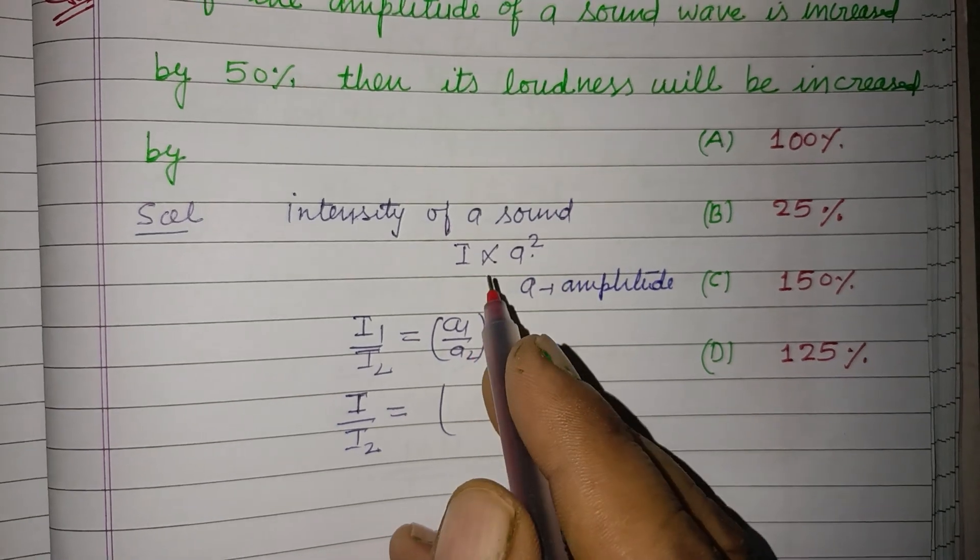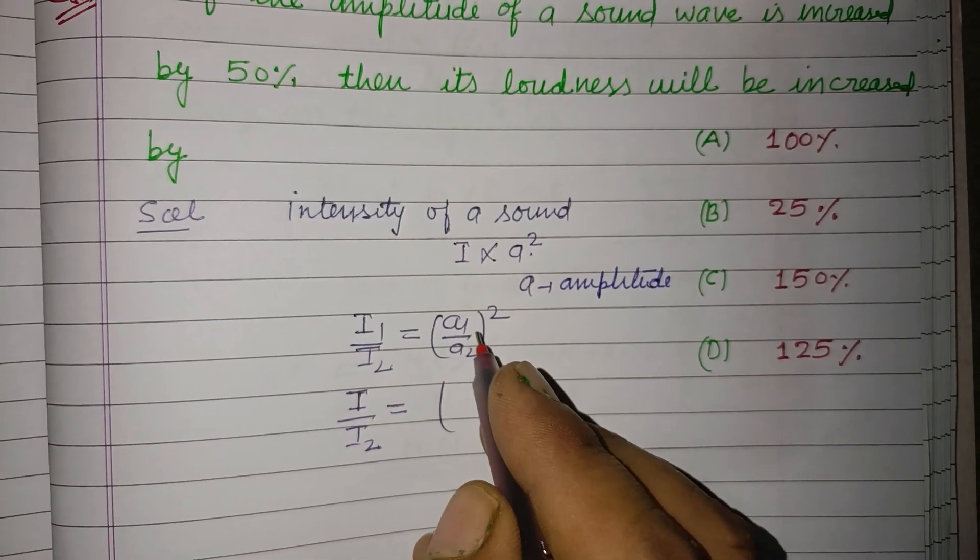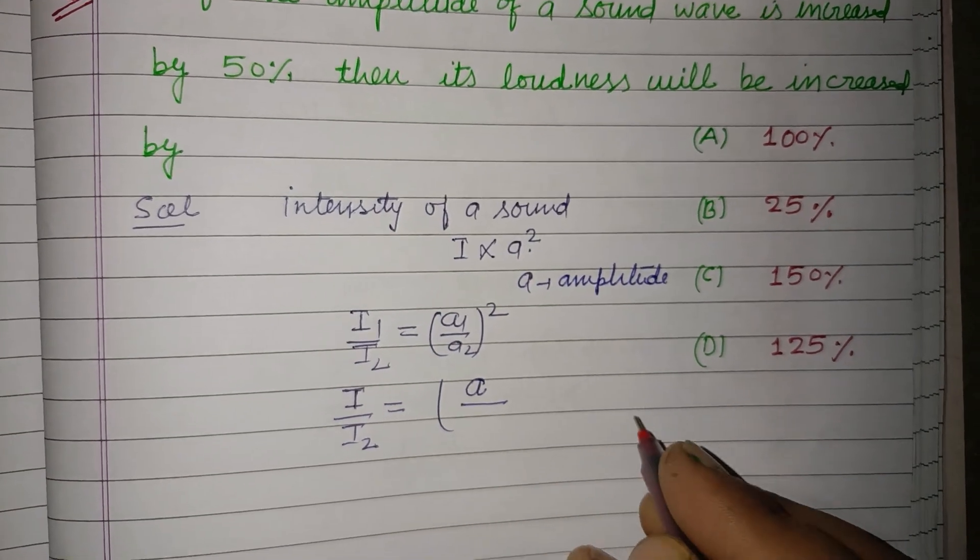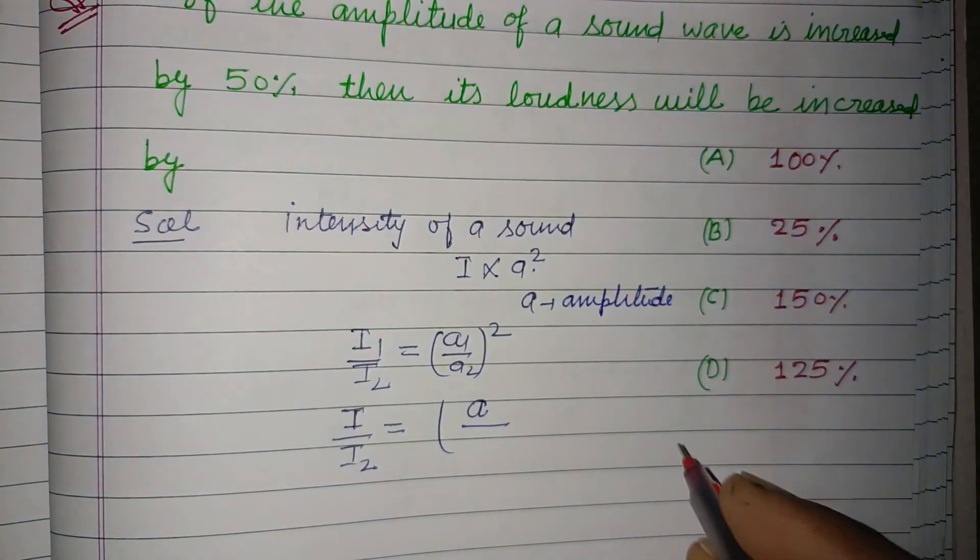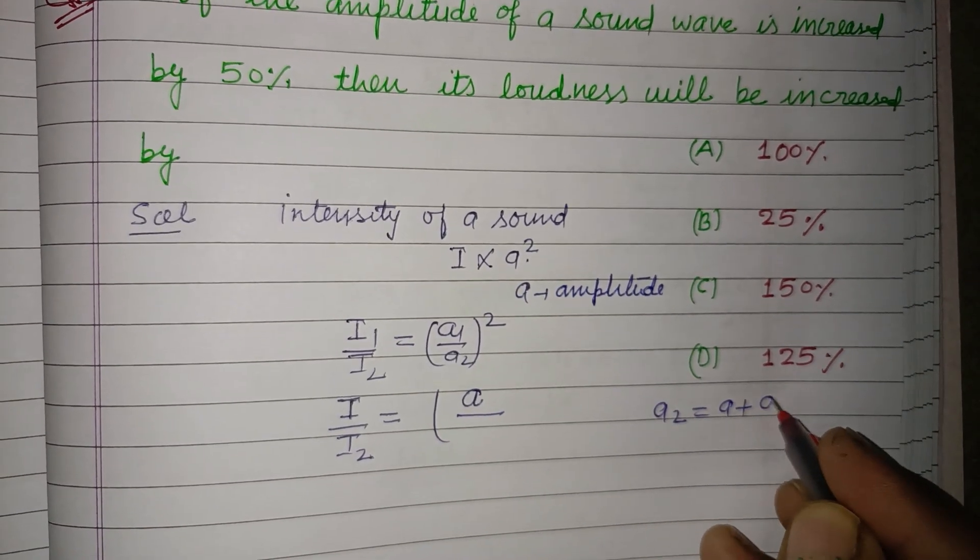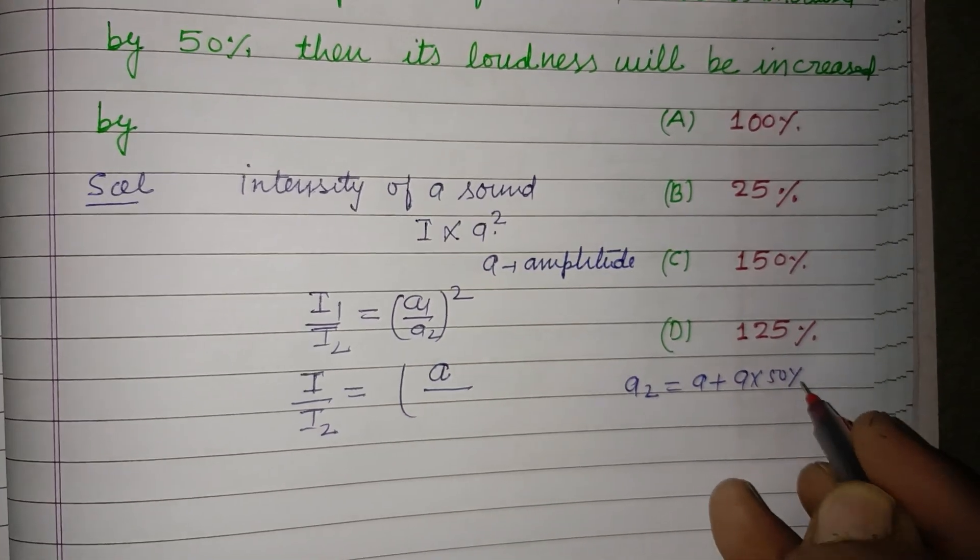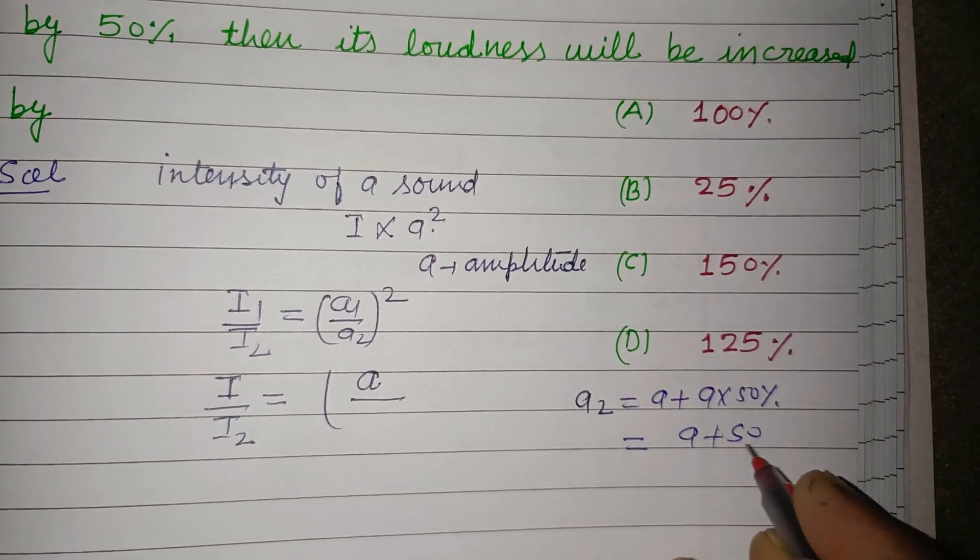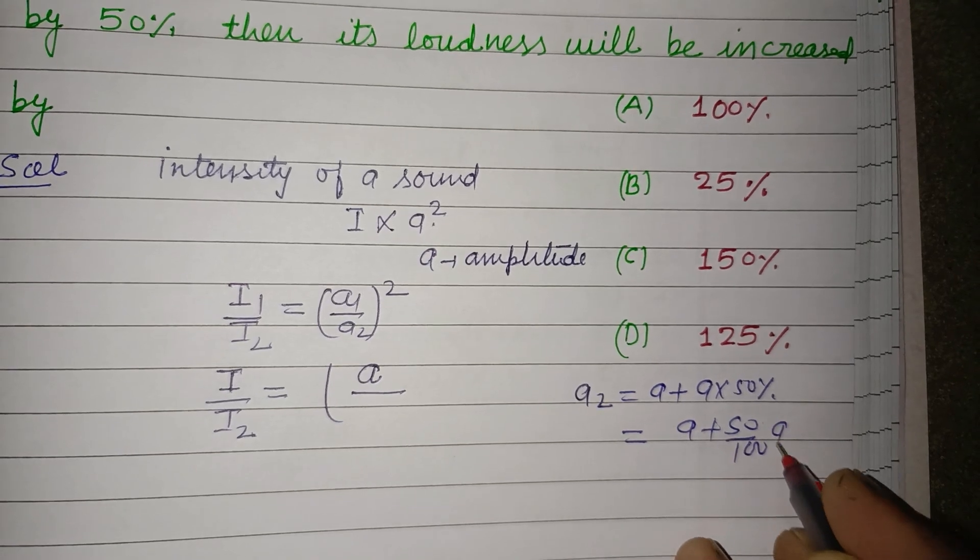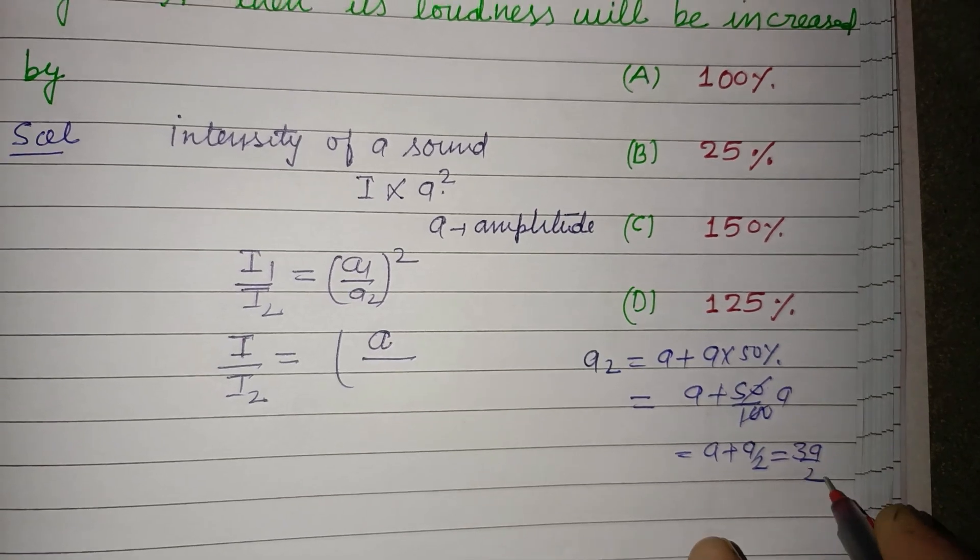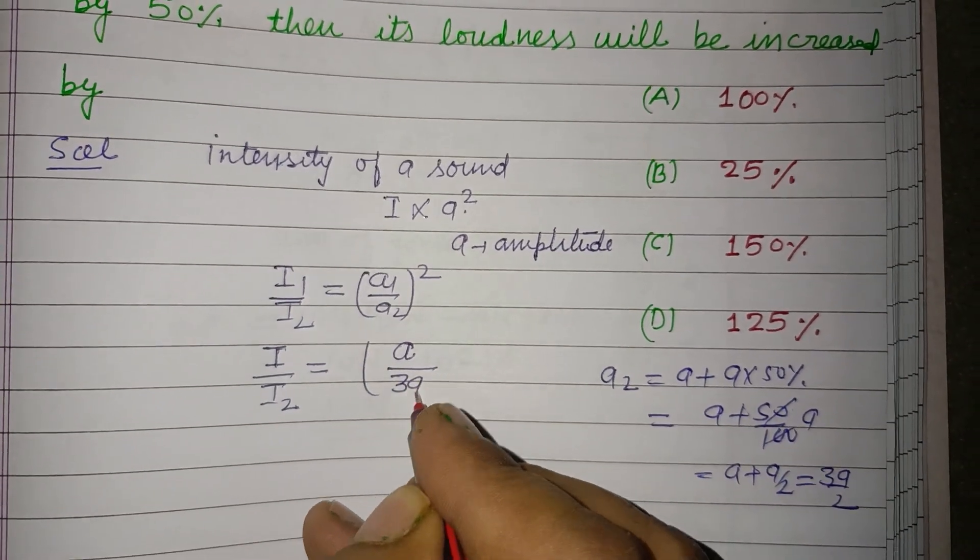a2 equals a plus a into 50%, which means a plus 50 upon 100 into a, equals a plus a by 2, that is 3a by 2. So this is 3a by 2 whole squared.